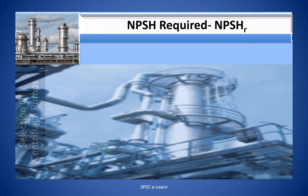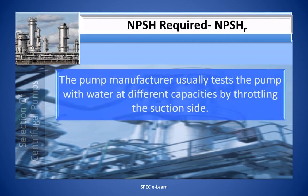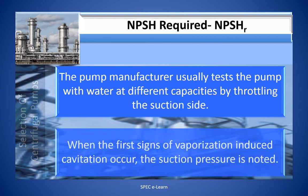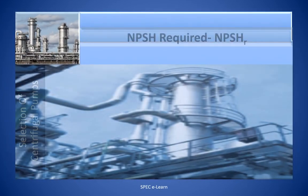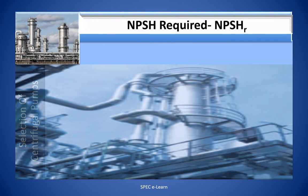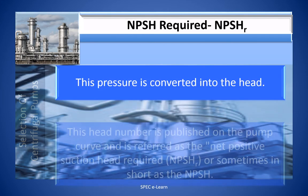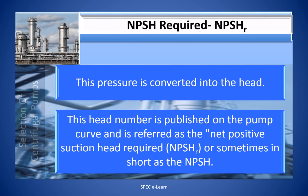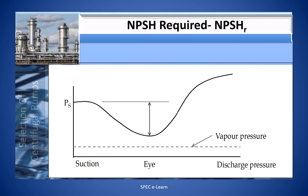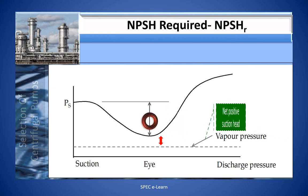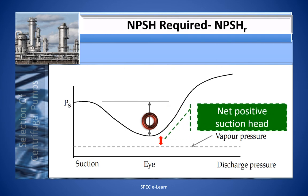The pump manufacturer usually tests the pump with water at different capacities by throttling the suction side. When the first signs of vaporization-inducing cavitation occur, the suction pressure is noted and converted into head. This head number is published on the pump curve and is referred to as the net positive suction head required (NPSHR). NPSHR is a function of pump design and is determined based on actual pump tests by the vendor.